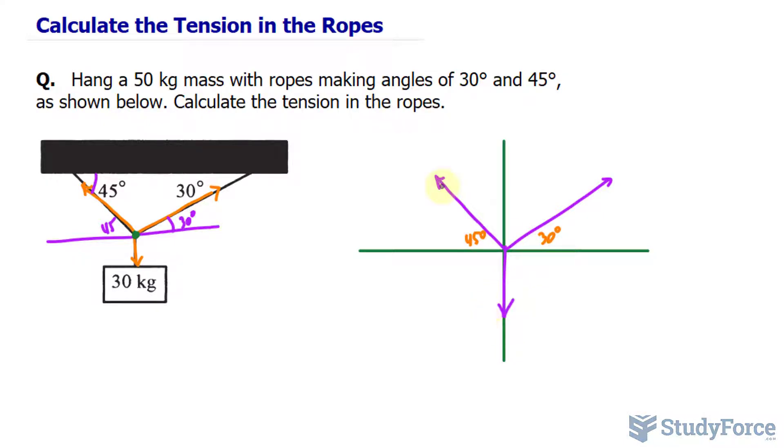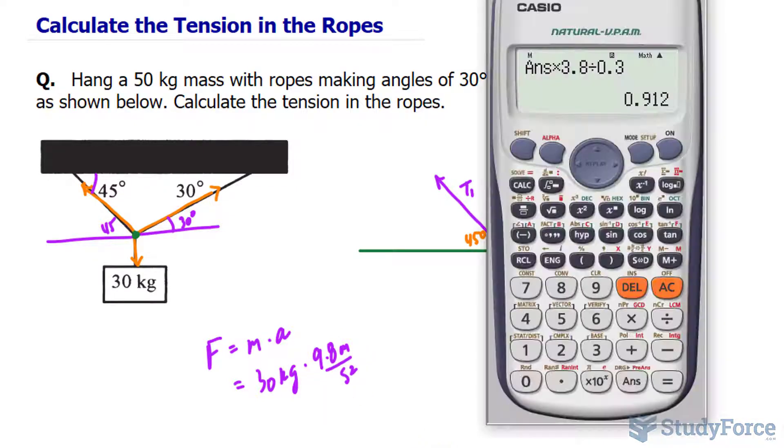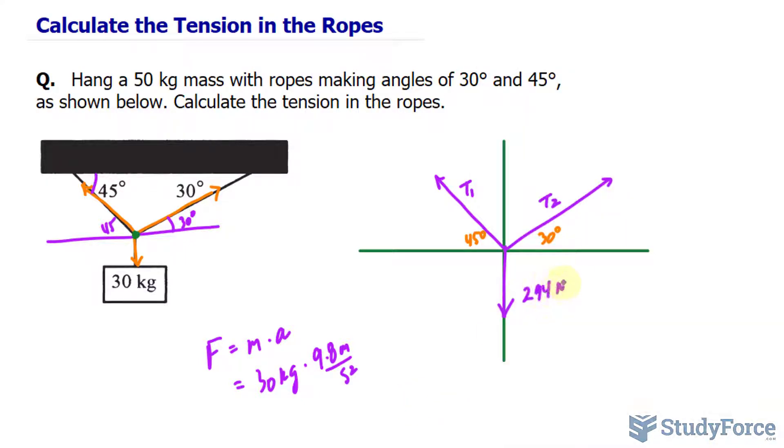We don't know the force or magnitude of this force, I'll call it T1 for tension. We don't know the magnitude of that force either, I'll call it T2. But we do know the magnitude of this force and we can find it using the formula for force: mass times acceleration. The mass is 30 kilograms and the acceleration is the acceleration due to gravity, a constant at 9.8 meters per second squared. Multiplying those out, we get 294 newtons down.